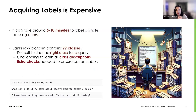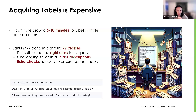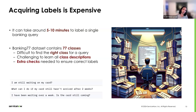Acquiring labels can be very expensive. In my experience with some text datasets, it took me around 5 to 10 minutes to label a single banking query. This was for the Banking77 dataset, which is open to the public and contains 77 classes. With 77 classes, it's very difficult to find the right class for a query, especially because many classes have very subtle differences. It's also challenging to learn all the class descriptions, and there's a chance you might label falsely, so extra checks are needed to ensure correct labels, adding extra time to the labeling effort.